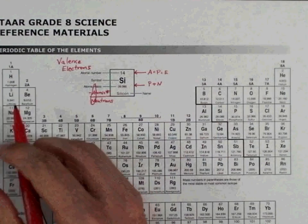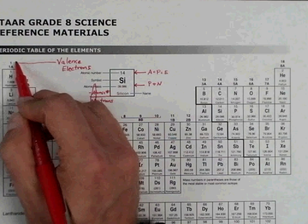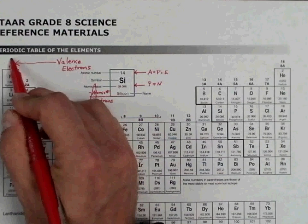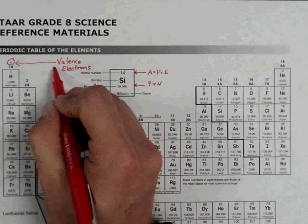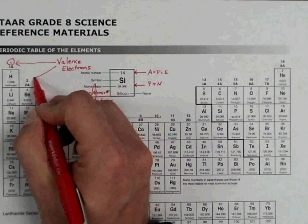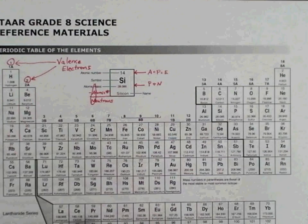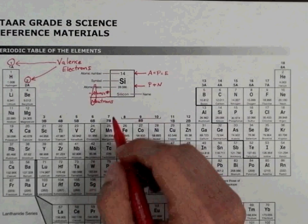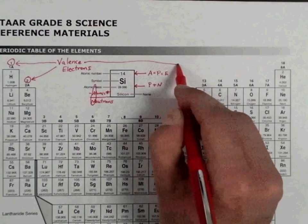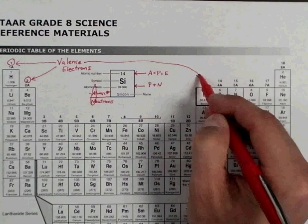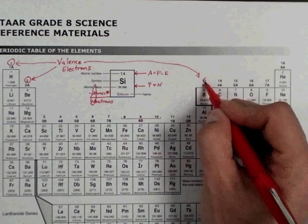I'll circle the group number or the part of the group number that represents the valence electrons. Notice that group one and two are also one valence electron and two valence electrons. But then we start working on groups 13 through 18. We have to drop the one off to make sure that we have the correct number of valence electrons.